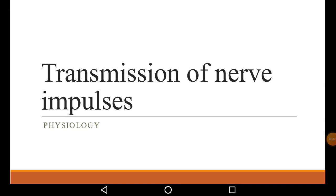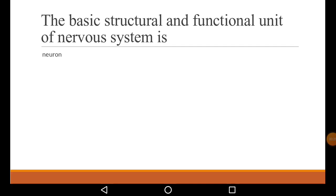Welcome friends. We are talking about transmission of nerve impulses — we will do question-wise detailed discussion here. We won't do a complete discussion but will focus on doubts that usually come up in exams. The basic structural and functional unit of the nervous system is a neuron — we know about it.